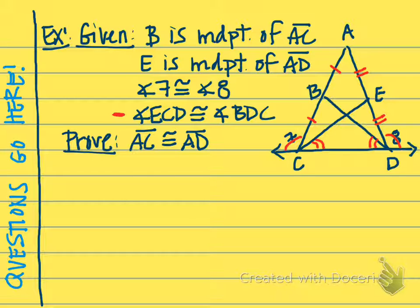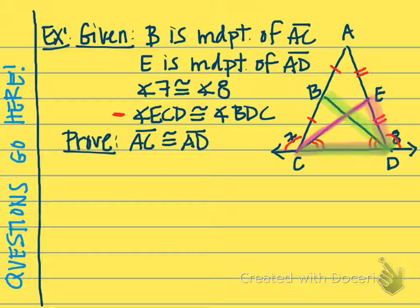If you kind of look at this — let me highlight these for you. If you look at this angle right here, it's a part of this triangle. And if we look at this angle right here, which is congruent to angle ECD, that's part of this triangle. So we've already got one pair of corresponding parts that are congruent. Also, both triangles overlap between C and D.